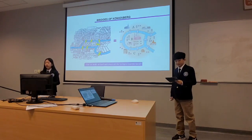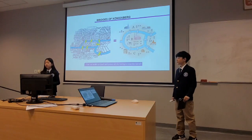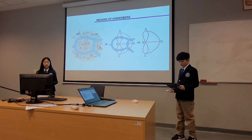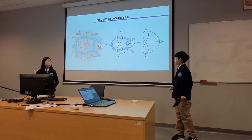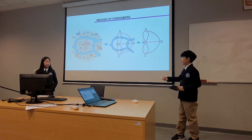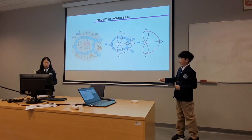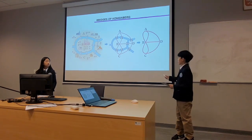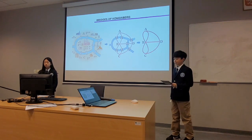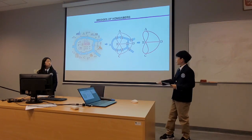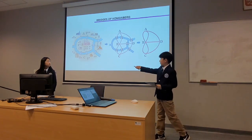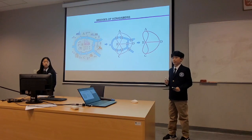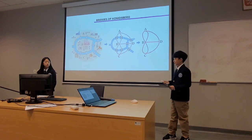Meanwhile, a German mathematician posed this problem to the Swiss mathematician Euler. Euler confirmed that the Pregel River is separated by seven bridges, and made a graph model similar to its shape. Euler thought that the shape of the land or river had nothing to do with solving the problem of the Königsberg bridge.